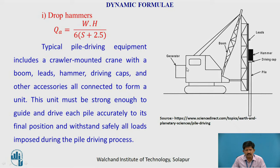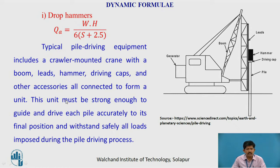A typical pile driving equipment includes a crawler-mounted crane with a boom, leads, hammer, driving cap, and other accessories all connected to form a single unit. The unit must be strong enough to guide and drive each pile accurately to its final position and withstand safely all loads imposed during the driving process.